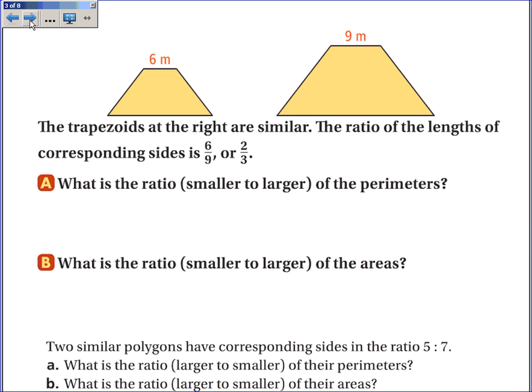Let's use that idea. These two trapezoids are similar and the ratio of their lengths is 6 over 9, which simplifies to 2 thirds. Question A: what is the ratio, smaller to larger, of their perimeters? The ratio of the perimeters is the same as the ratio of the corresponding sides, so it must be 2 over 3. Question B: what is the ratio of their areas? That will be the ratio squared — 2 squared is 4, 3 squared is 9 — so the ratio of the areas is 4 over 9.